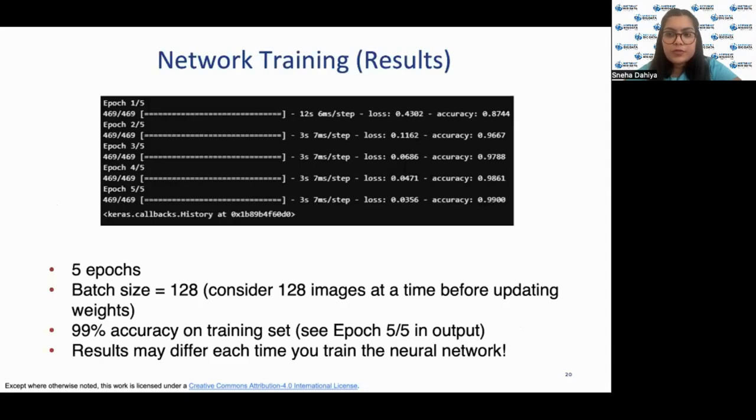Now let's look at the training set accuracy and the results. Following are the results of training our model. After running it through five epochs, the batch size is 128. Batch size means we are considering 128 images at a time before updating the weights. As you can see in the first epoch, our model accuracy for the training dataset is 87.4%. For the second epoch, it's 96.67%. For the third epoch, it's 97.8%. For fourth, it's 98.61%. And finally, after the fifth epoch, we obtain a very high accuracy of 99%, which is a good accuracy in terms of machine learning models.